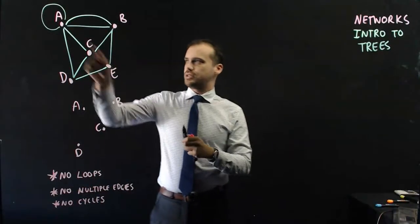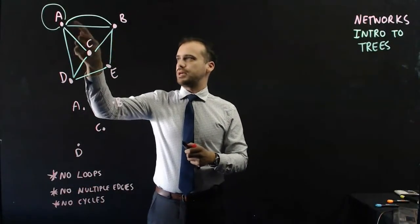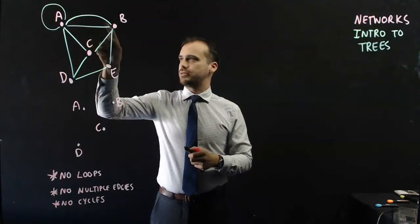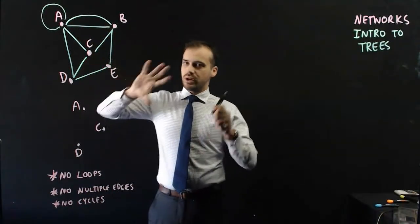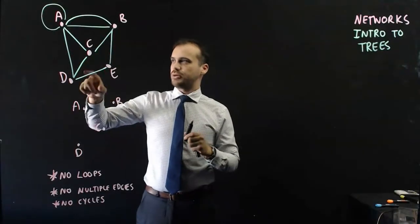No multiple edges. You can see there's a multiple edge between A and B. There's a road that way and a road that way. And no cycles. So there are a lot of cycles in this graph at the moment.